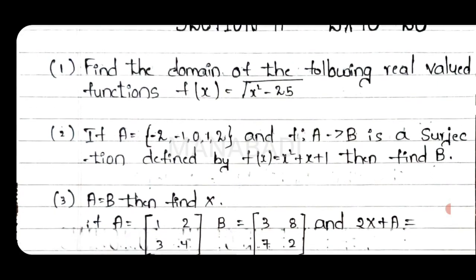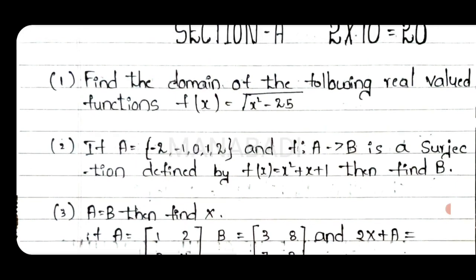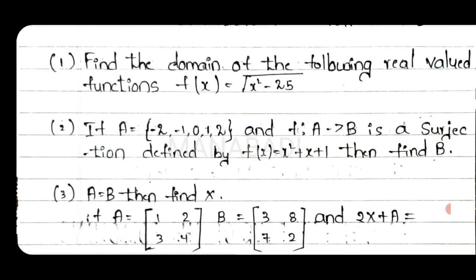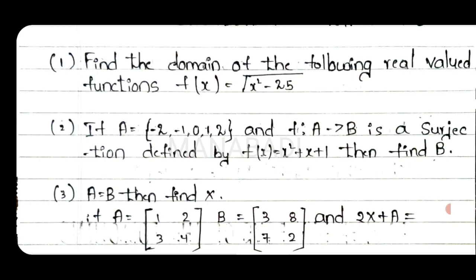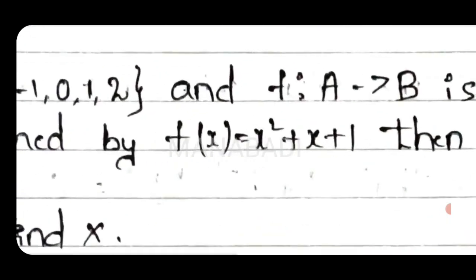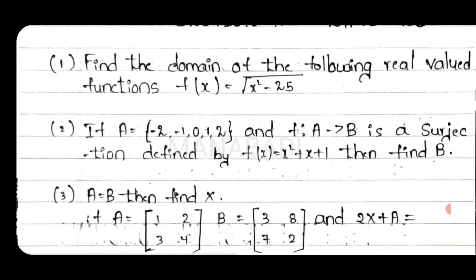First question is 2 marks: find the domain of the following real-valued function — f of x equals to root over x squared minus 25. Then find the b value. This is the a values equation. We have to do a matrix. Next, we will explain the equation.